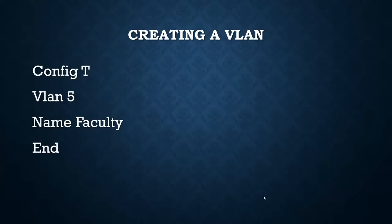To create a VLAN, go to global config mode, then just type 'vlan 5' and it's created. Your prompt will change, and then you can name it. We typically name our VLANs - it's a lot easier to figure out what the VLAN does. If you've got VLAN HR, VLAN marketing, VLAN sales, you know exactly what they do. But if you've got VLAN 3, 4, and 5, you have no idea. In IT, jobs cycle and the new network administrator needs to know what's going on. So from global mode: 'vlan 5', enter, 'name faculty', enter, end.